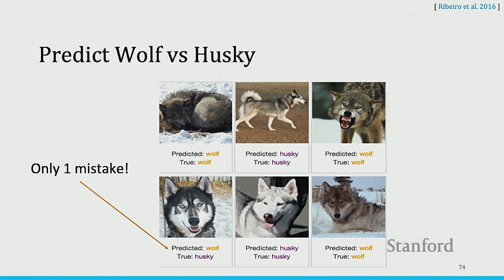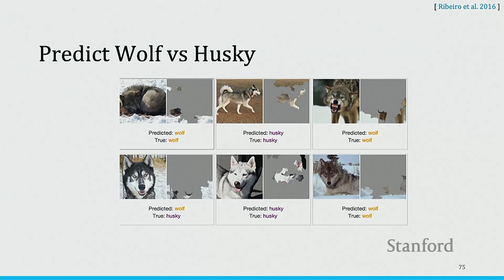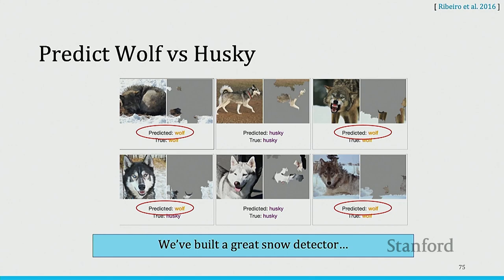This paper also gives some classic examples illustrating the necessity of explanations. If you just look at predictions made by some model, you might see only one mistake and think the model is doing extremely well. But once you see the explanations output by LIME, you realize what you've essentially built is a snow detector — the model is relying on snow in the background rather than the actual object. This kind of insight can only be obtained from explanations.